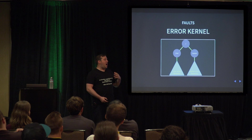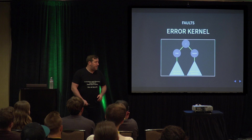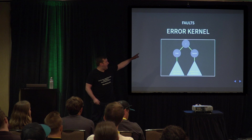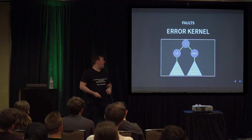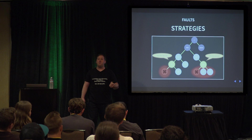Akka.NET uses the error kernel pattern, which comes from Erlang. The idea is there's a root actor, underneath which are the user and system hierarchies, and underneath user is all your stuff — a large tree of actors. The error kernel says: push risky operations down to the leaves, keep the critical core safe.